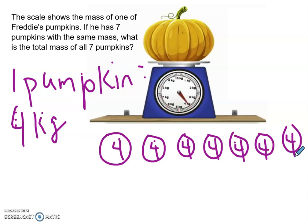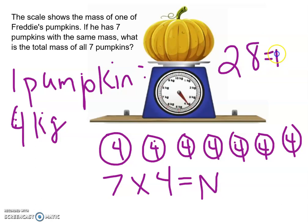So what equation would that be? He's got seven pumpkins, and they're all four kilograms. So seven times four equals N. Hopefully, you know your multiplication, and you know that seven times four is 28. So N equals 28, which means that the total mass of all of his seven pumpkins is 28 kilograms.